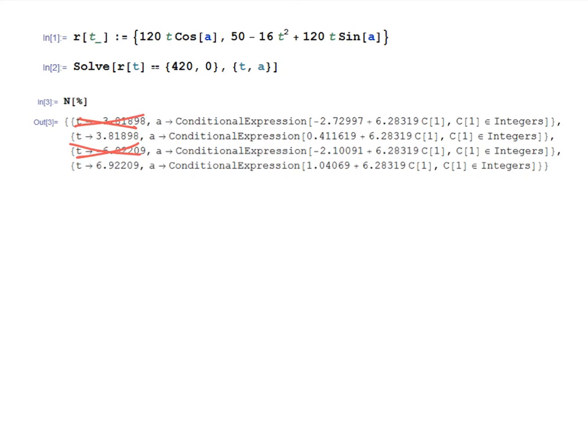So we've got a conditional expression, and we've got these decimals 0.411619 and 1.04069. Now there's other stuff though, so what's this other stuff? Well if you notice here, 6.28319, that shouldn't look too crazy to you, because 6.28, that should make you think, well, pi is 3.14, and in fact 6.28319 is approximately 2 pi. So all this is telling you is that there are solutions for any value of alpha if I add or subtract multiples of 2 pi, and this c1 here is just going to be an integer.